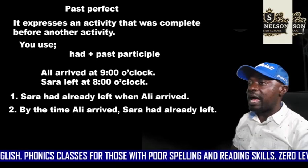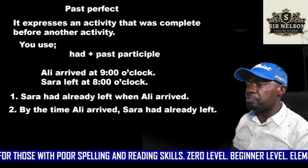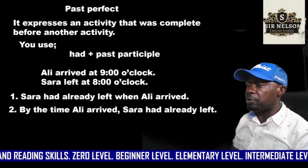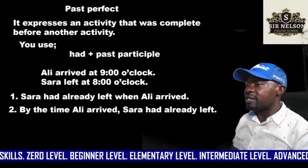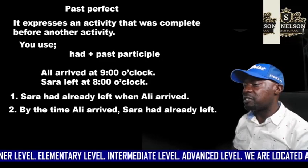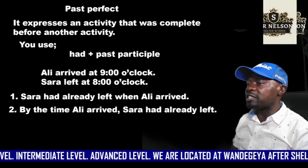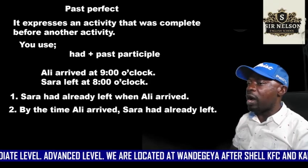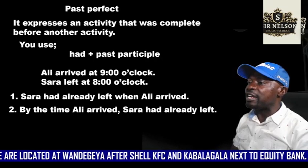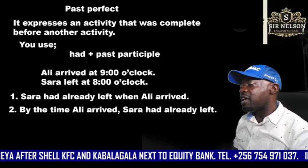For example: Ali arrived at 9 o'clock — that is past simple. Sarah left at 8 o'clock — that's past simple. Number one: Sarah had already left when Ali arrived. That is the past perfect. Two activities happened; Sarah leaving happened before.